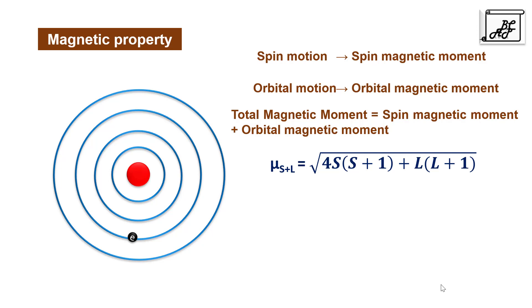In the second video of transition elements we saw that transition metals have a very good ability to form a complex, and the characteristic d-electron filled in the (n-1) shell or penultimate shell is involved in the formation of a complex. Therefore its orbital motion — that is revolving around the nucleus — is quenched, and the total magnetic moment depends only on the spin motion, because the electron is involved in the formation of a complex.